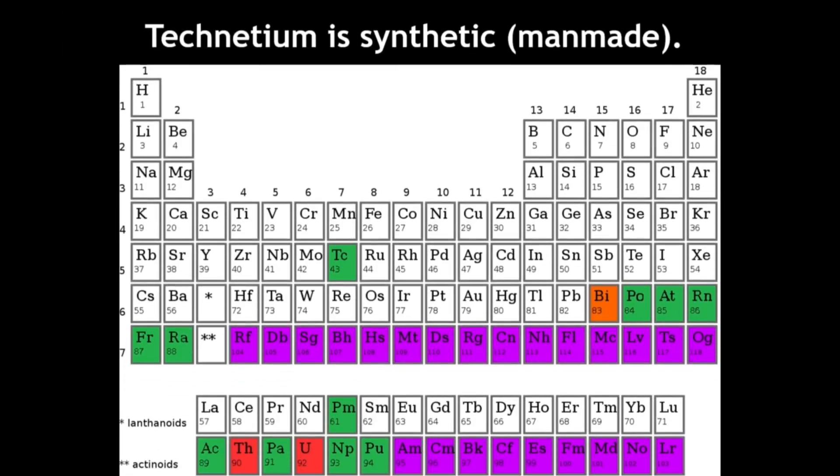Along with this, technetium is a synthetic element, meaning that it does not exist naturally in nature. It was first reported to be synthesized in 1925 by three German chemists, Nodak, Berg, and Tack.